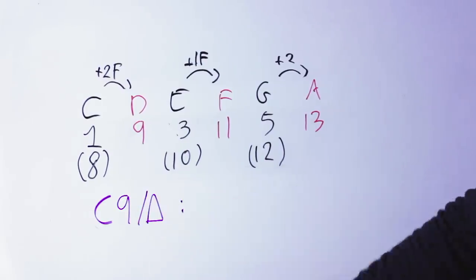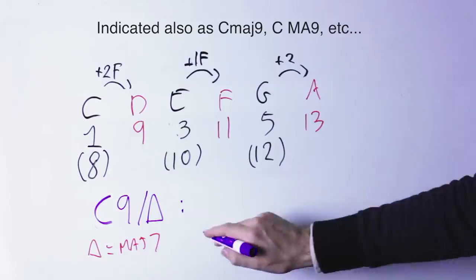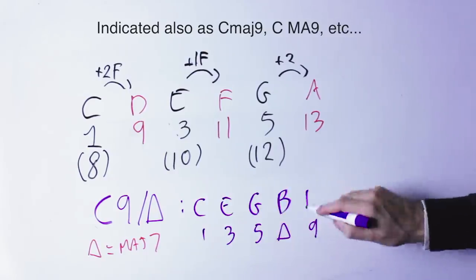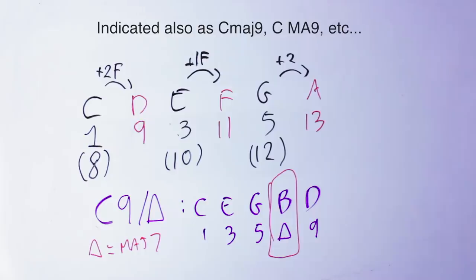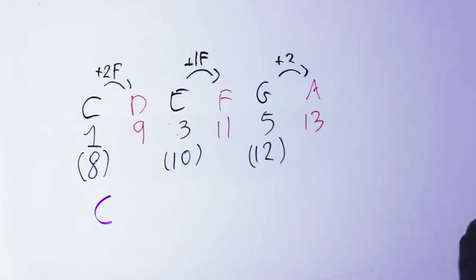with this D flat being the flat nine. I can also have a C nine with a major seven. Rather than putting in the standard minor seven, I put in the major seven, and the notes are C, E, G, B, D.